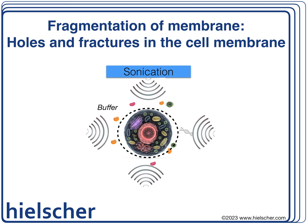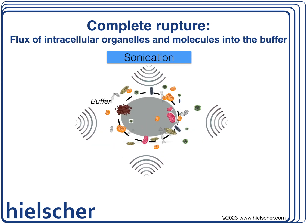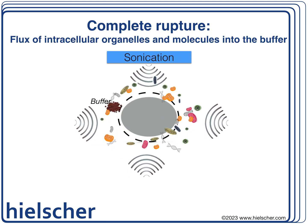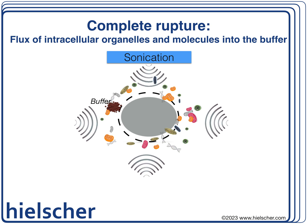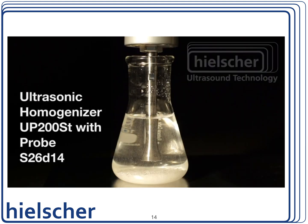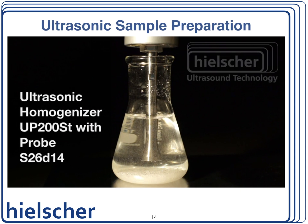Finally, the cell wall gets completely disrupted by the ultrasound. The acoustic streaming promotes mass transfer, and all intracellular compounds are released into the buffer solution. Due to this efficient cell disruption and homogenization, sonicators provide excellent lysis of cells and complete isolation of proteins, ensuring that the extracted proteins are representative of the entire cell population, which is important for accurate analysis.